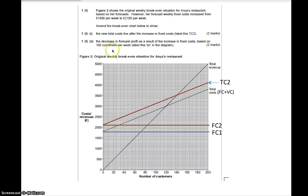The next part of the question was actually a bit daft, but we'll have a look at it anyway, because we get two marks for it. It says the decrease in forecast profit - you need to identify the decrease in forecast profit as a result of the increase in fixed cost, based on 180 customers per week. The reason I say it's daft is because if fixed costs have gone up by 300, and revenue hasn't changed, and variable costs haven't changed, we therefore know that profit must have gone down by 300.